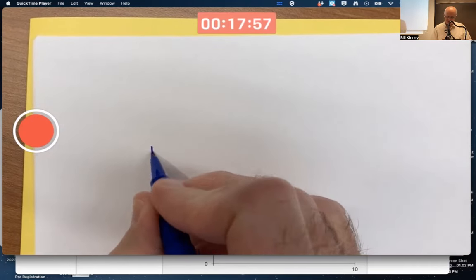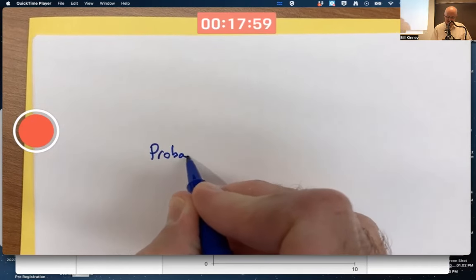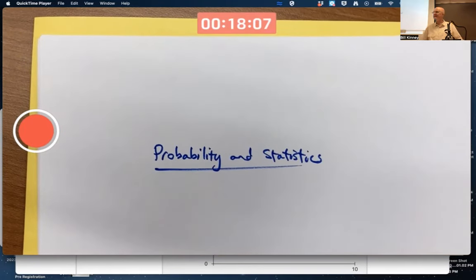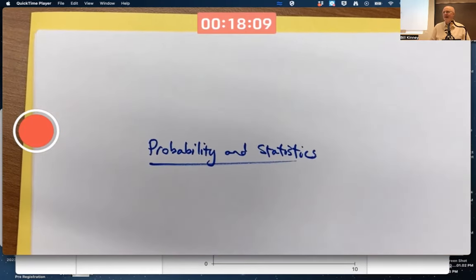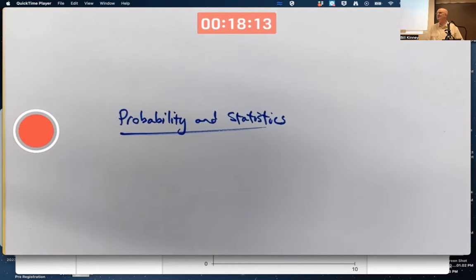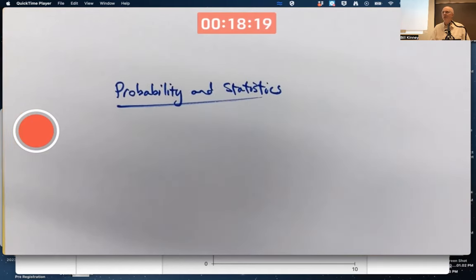This class is Probability and Statistics for the Engineering and Computing Sciences. This is calculus-based, and we're also going to talk about applications to data science and actuarial science as we go. But we want to start basic.